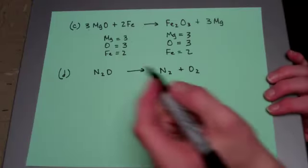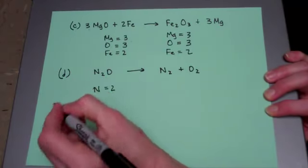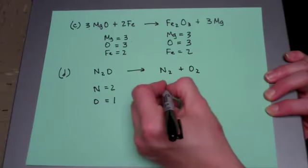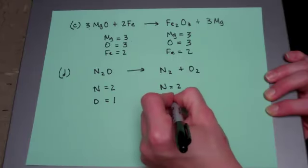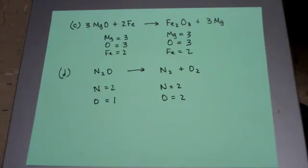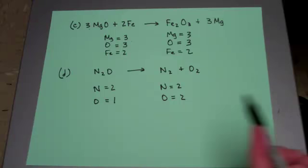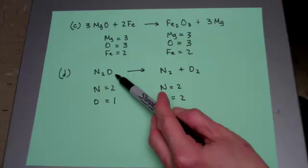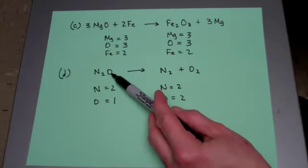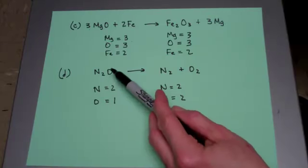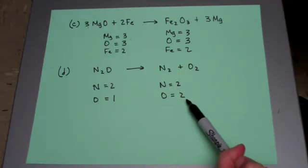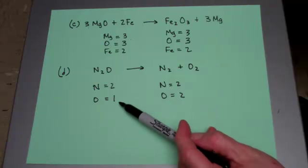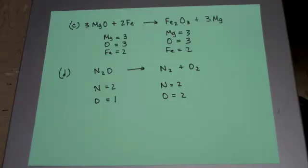Now let's look at D. This one is obviously not balanced. Currently I have two nitrogens and one oxygen on the left, and two nitrogens and two oxygens on the right — because oxygen in its elemental form must be bonded to itself as a diatomic molecule. Dinitrogen oxide breaks down into nitrogen gas and oxygen gas. The easiest approach is to find the lowest common denominator to get an even number of oxygens, because you can never balance evens against odds without choosing a coefficient that makes the odd side even.